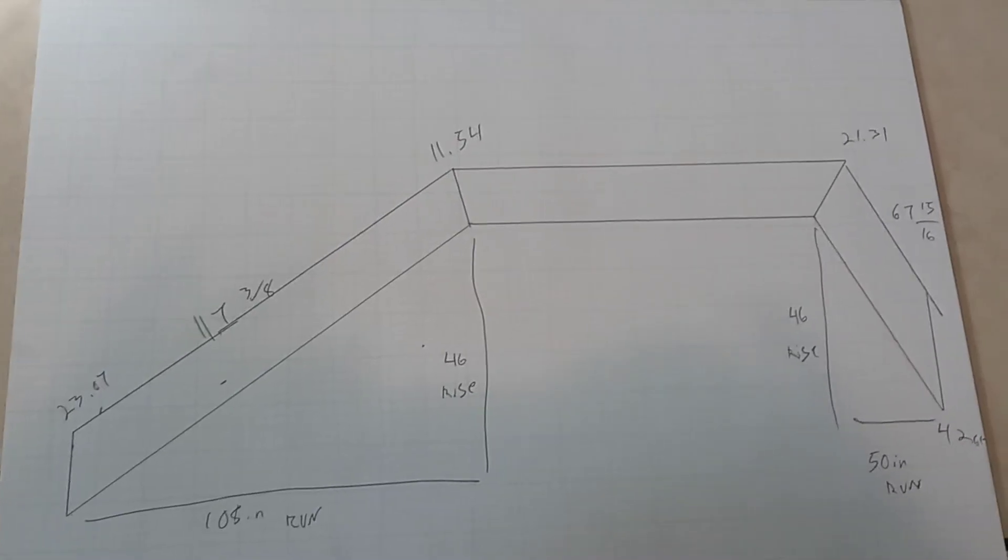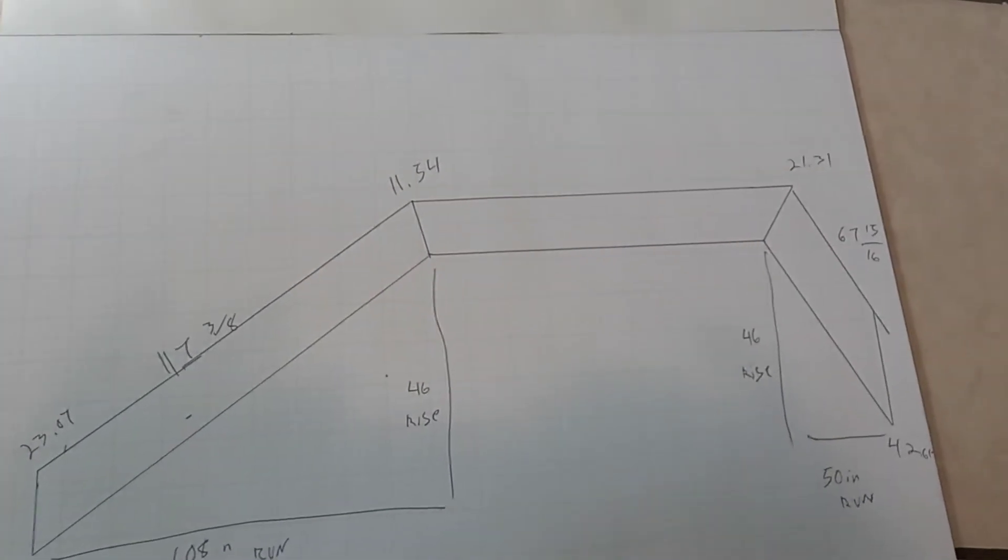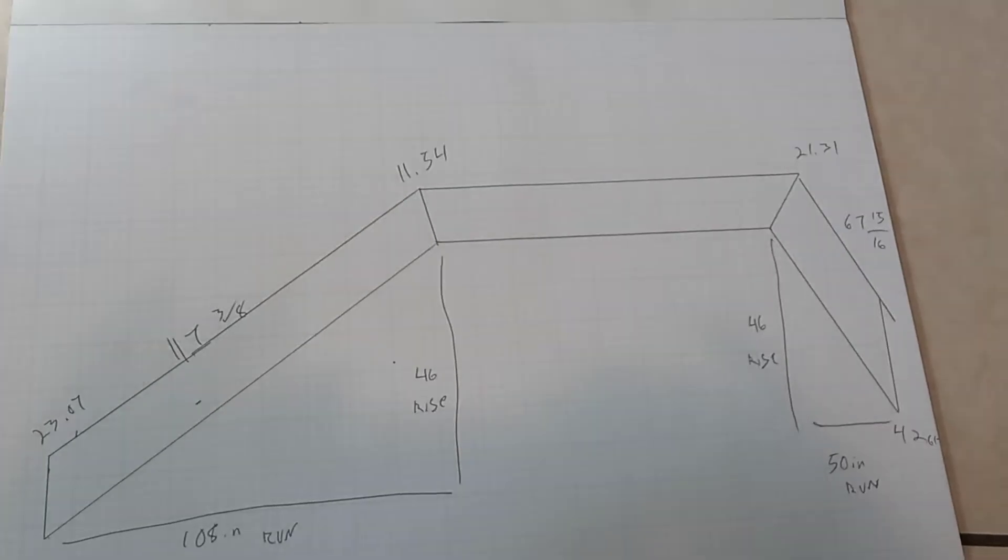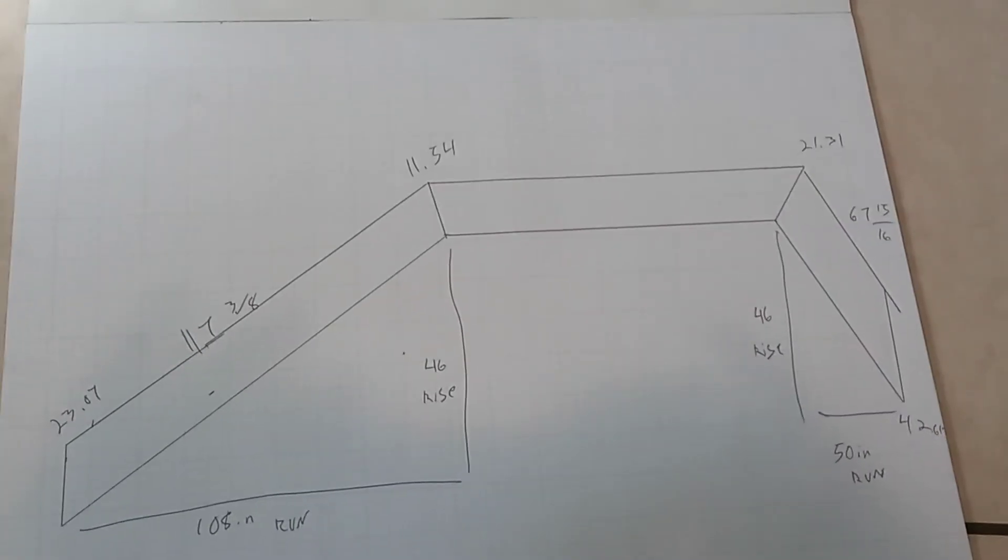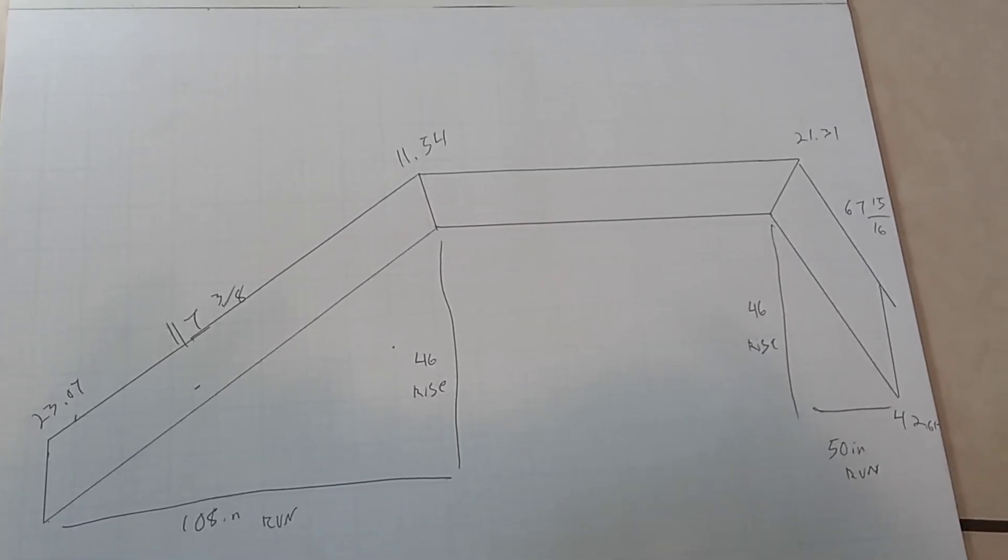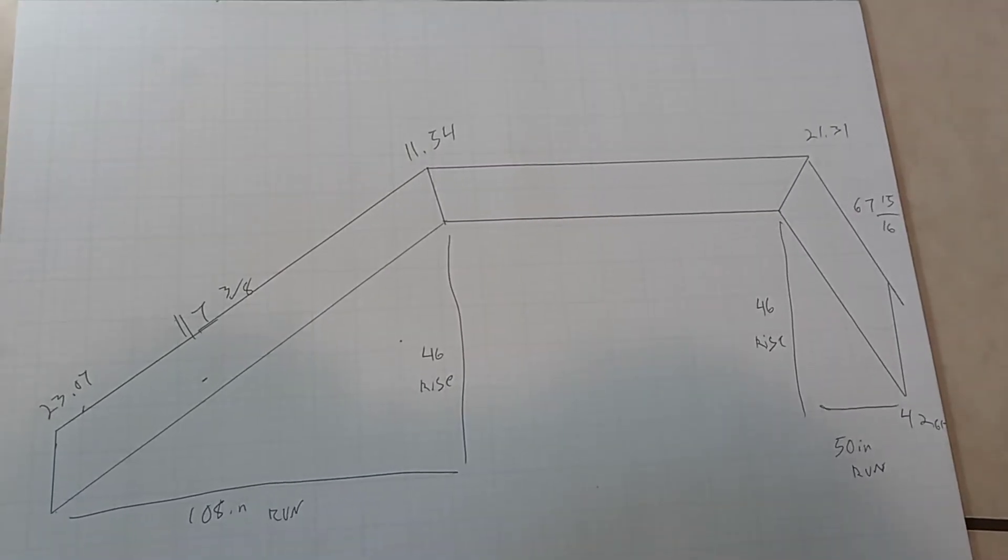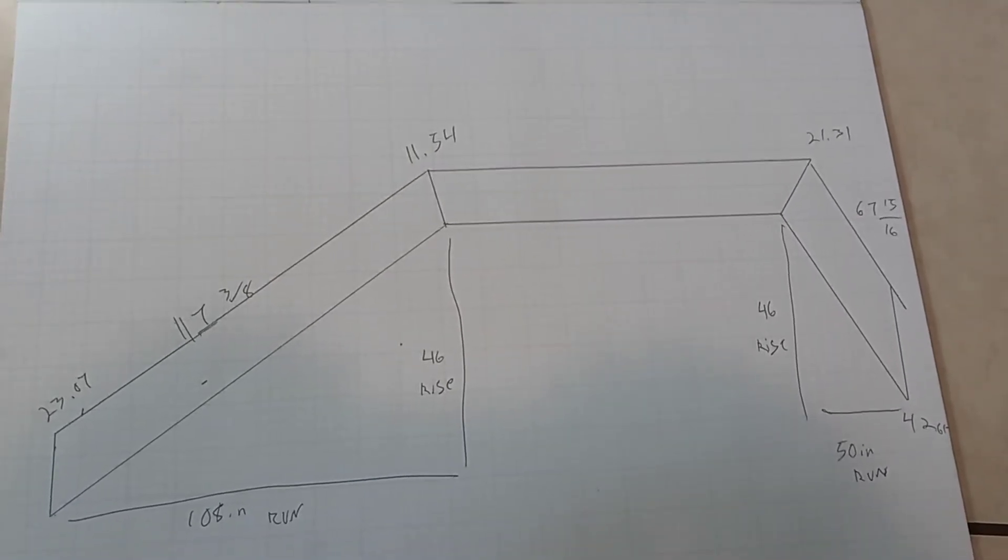And the diagram I have here is for a custom mansard roof. If you know anything about roof framing calculations, then you'll know the run and rise formula, also known as Pythagorean Theorem.